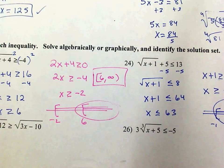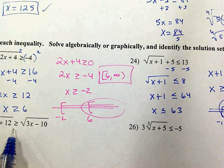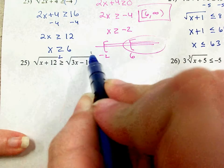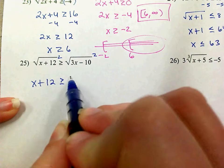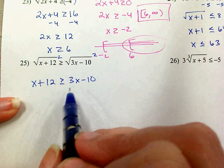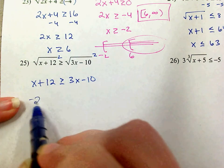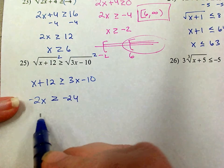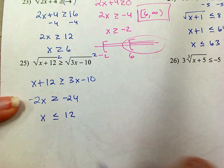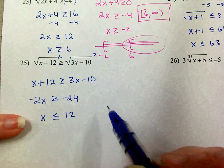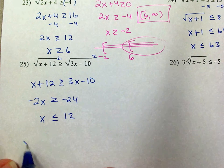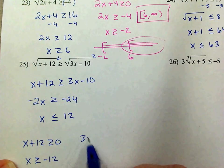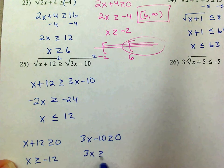Remember: if there's not an equal-to bar, use parentheses, not brackets. On this problem, I square both sides to get rid of the square root. So x plus 12 has got to be greater than or equal to 3x minus 10. Subtracting 3x and 12 gives negative 2x is greater than or equal to negative 24. Dividing by negative 2 and switching the symbol: x is less than or equal to 12. But I also need x plus 12 greater than or equal to 0 (so x ≥ −12), and 3x minus 10 greater than or equal to 0 (so x ≥ 10/3).